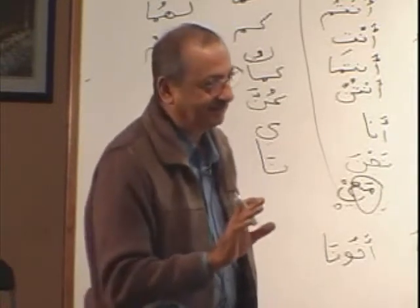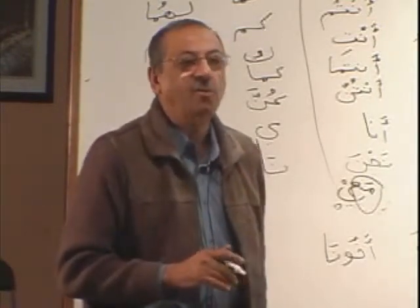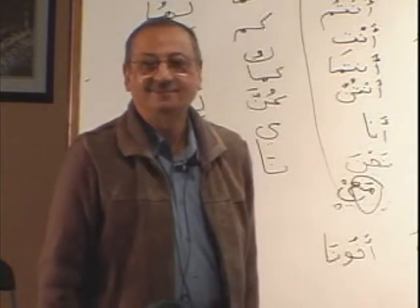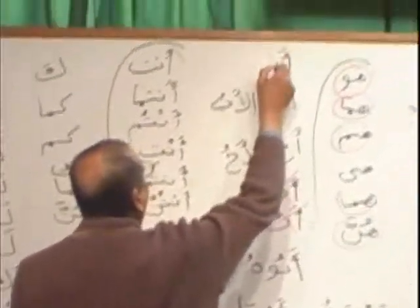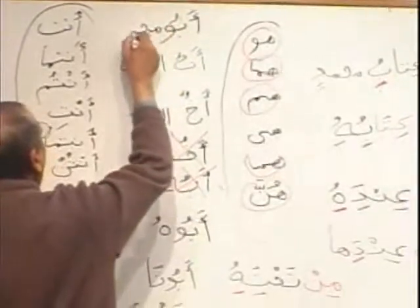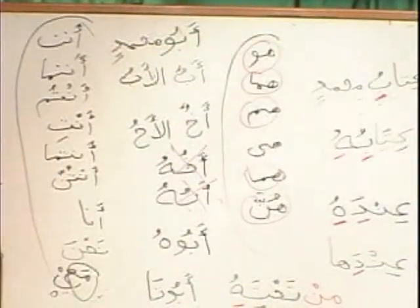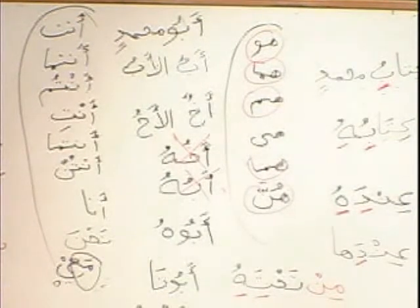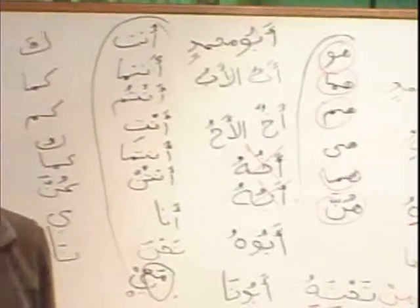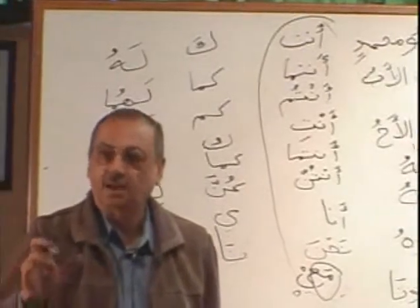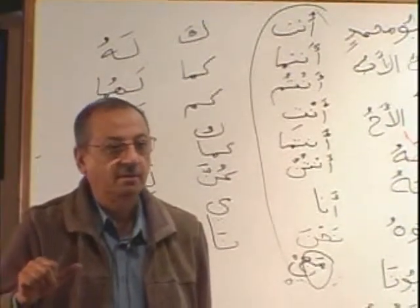The waw will come when ahu and abu come as a mudaf, not otherwise. Even when the noun is a proper noun — how would you write down Abu Muhammadin? The waw will come out. Why? Because abu now came as a mudaf. How will you write down 'Muhammad's brother' — ahu Muhammadin? Again, waw will come out. Whether it is a pronoun or it is a noun, waw will come out only when abu and ahu become mudaf.